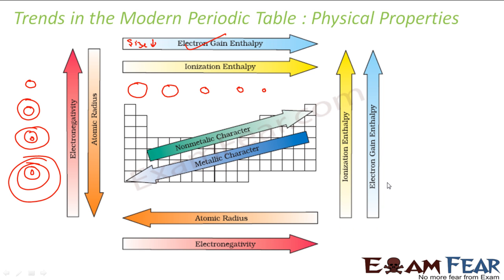If you go across the period the size is also decreasing, so electron gain enthalpy also increases. Ionization enthalpy is almost the same trend as electron gain enthalpy — because if you go from left to right, more energy is required to remove one electron, so the ionization enthalpy also increases.